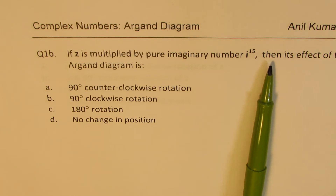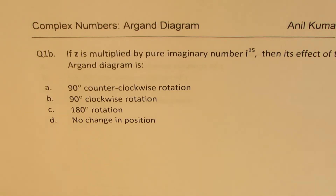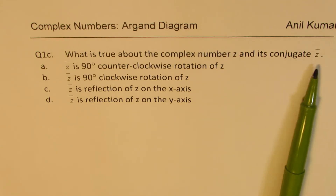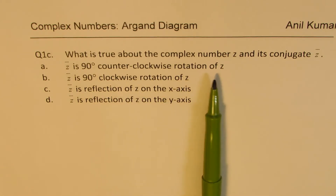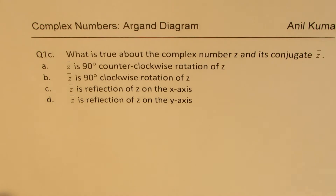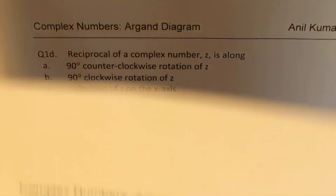Its effect on the Argand diagram is what? Is it a rotation by 90 degrees clockwise, counterclockwise, or by 180 degrees, or there is no change? Part C of the same question is: what is true about the complex number and its conjugate? Is the conjugate a 90 degrees counterclockwise rotation of the complex number, or clockwise rotation, or a reflection on the x-axis, or a reflection on the y-axis? The last part is: the reciprocal of a complex number z is along — 90 degrees counterclockwise rotation of z, 90 degrees clockwise rotation of z, reflection of z on the x-axis, or reflection of z on the y-axis? These four questions are very much related. I hope you find it interesting and useful.